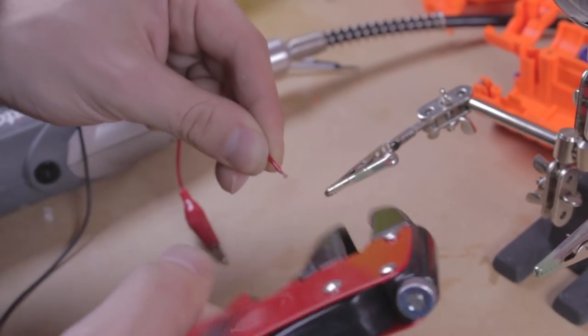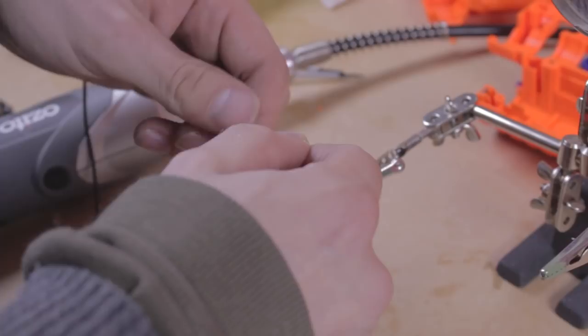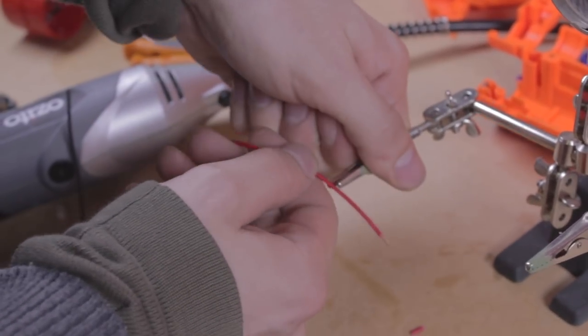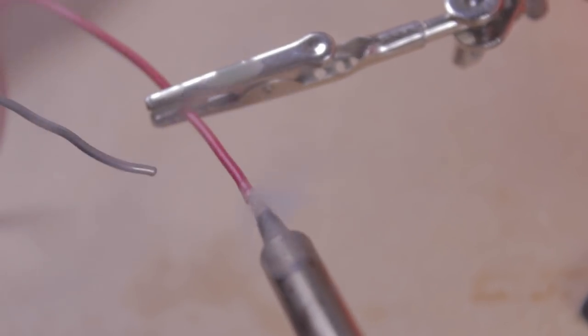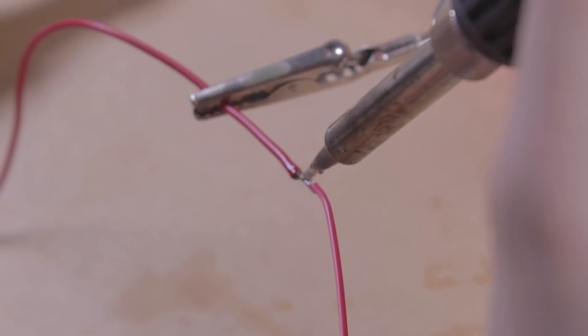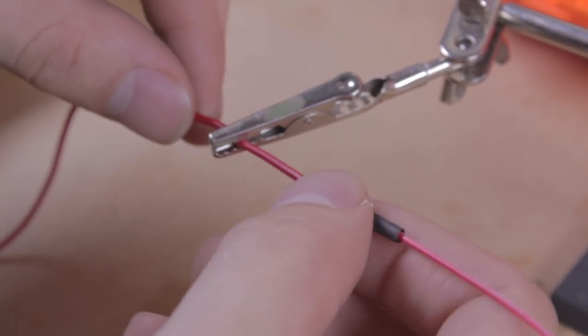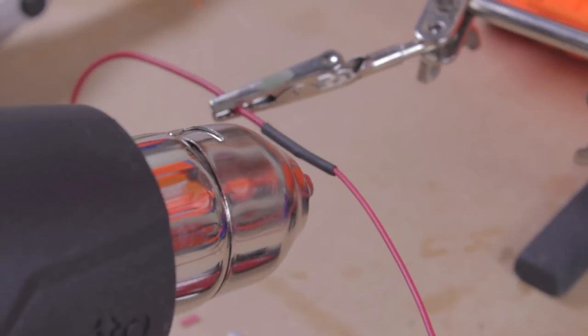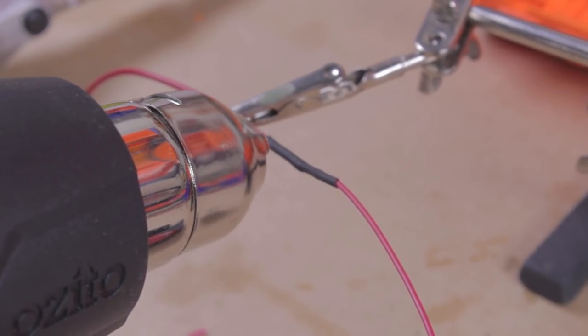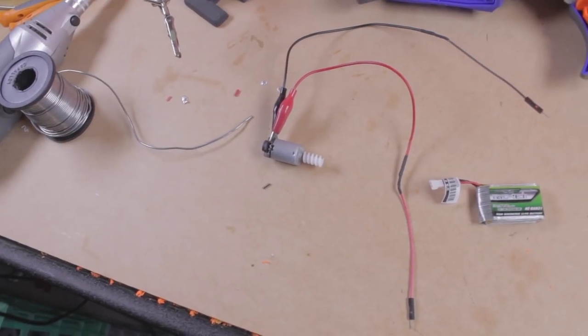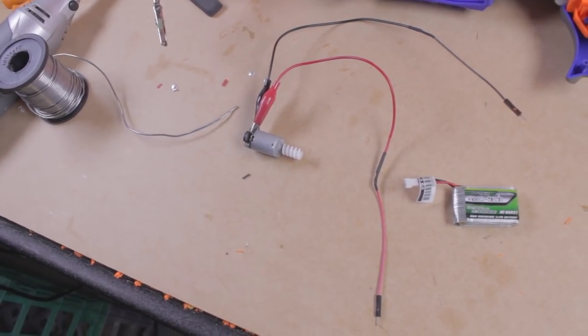Before we begin let's start an important process for the ransom motor, the burn-in. Take the alligator clips and strip a section of each. Tin the wires for a good electrical connection and solder on the connectors for your small battery. I used a 1S lipo and DuPont wire pins to connect to it but you could use two AA batteries in a holder instead.